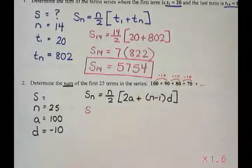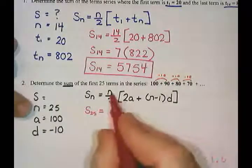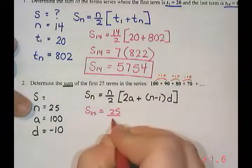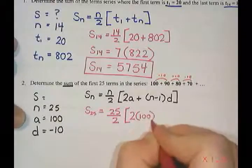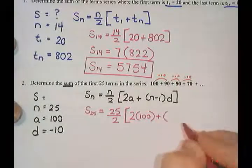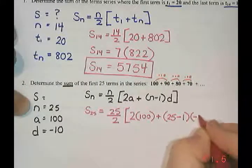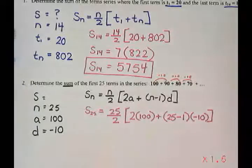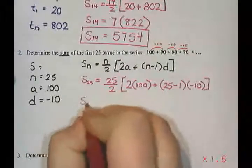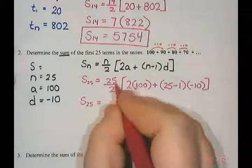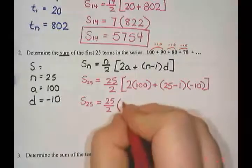So I'm going to substitute all of those things into the formula. So S_n, I could just leave it as an S. I could put a 25 to say that it's the sum of the first 25 terms. Is n, so 25 divided by 2 times 2 times a, so the first term is 100, plus n is 25 minus 1 times d, which is negative 10. So order of operations, our BEDMAS rules said you need to do your brackets first. So I've got the sum of the first 25 terms. This does not divide evenly, so I'm going to save it and just do it at the end. 2 times 100 is 200.